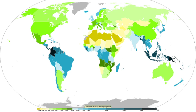Stratiform or dynamic precipitation occurs as a consequence of slow ascent of air in synoptic systems on the order of centimeters per second, such as over surface cold fronts and over and ahead of warm fronts. Similar ascent is seen around tropical cyclones outside of the eyewall, and in comma-head precipitation patterns around mid-latitude cyclones. A wide variety of weather can be found along an occluded front, with thunderstorms possible, but usually their passage is associated with a drying of the air mass. Occluded fronts usually form around mature low-pressure areas.